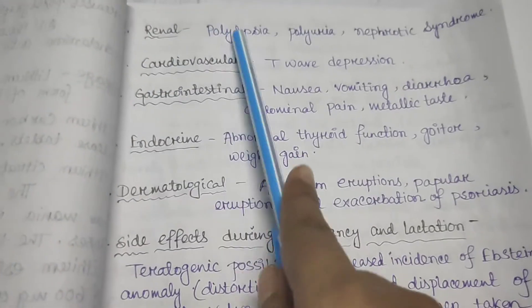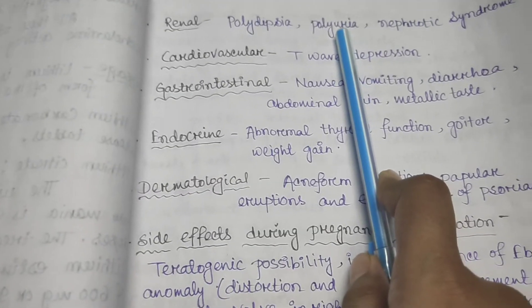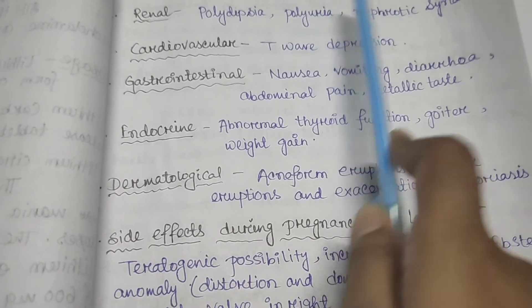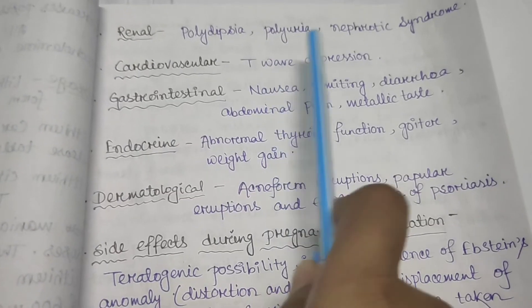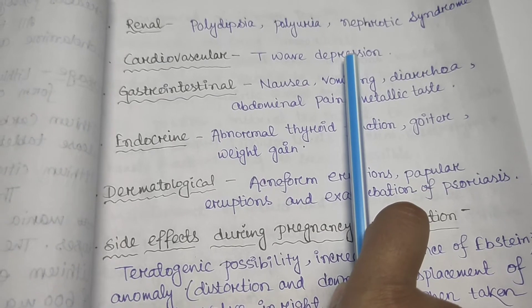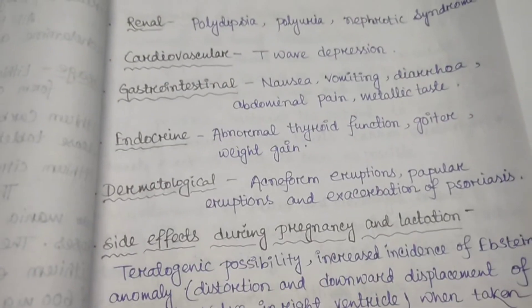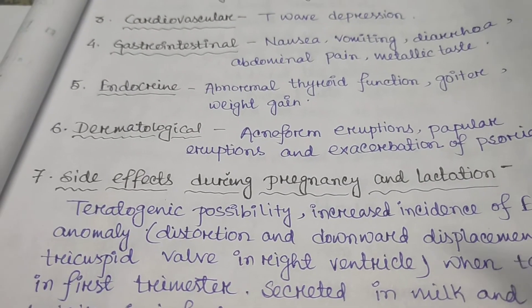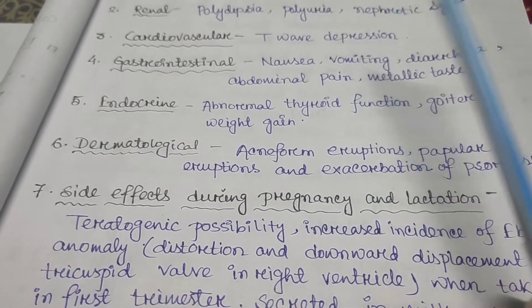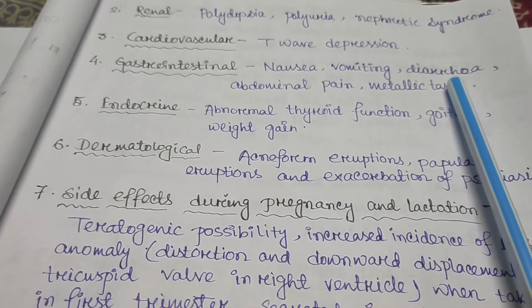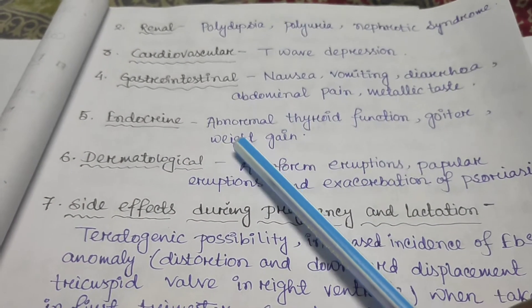Renal side effects include polydipsia (increased thirst), polyuria (excessive urination), and nephrotic syndrome. Cardiovascular side effects include T-wave depression on ECG. Gastrointestinal side effects include nausea, vomiting, diarrhea, abdominal pain, and metallic taste.